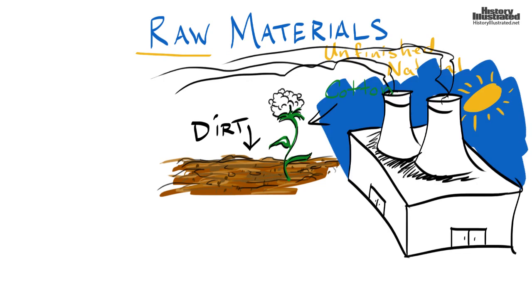So those raw materials, all of them get sent to a place similar to a factory, and they're turned into something we call manufactured goods.